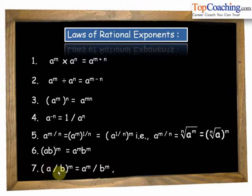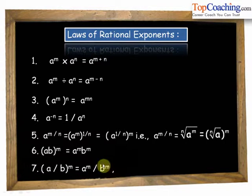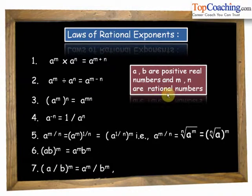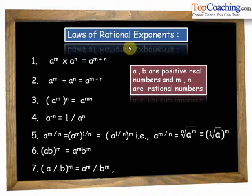The seventh is a by b to the power of m equals a to the power of m divided by b to the power of m — also the same as integral exponents. The important point here is that a and b are positive real numbers and m and n are rational numbers. These are the laws of rational exponents, which are almost similar to the laws of integral exponents.